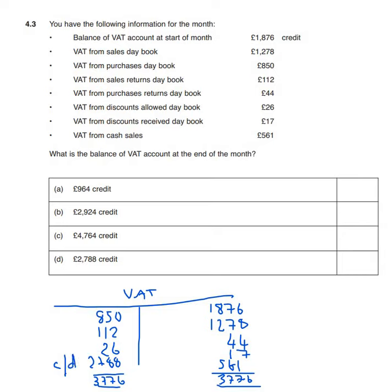That balance would be brought down onto the credit side — the amount owing to HMRC. Looking at the answer options: 964 — no; 2924 — no; 4764 — no. The answer is 2788, which is our balance carried down.